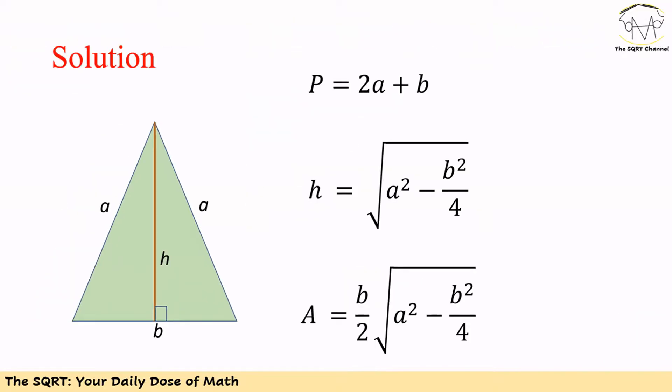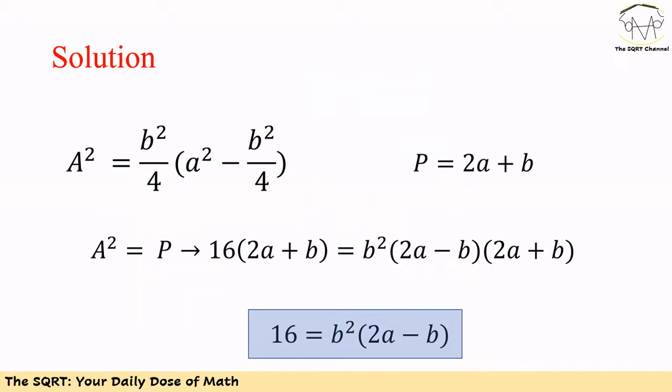In this triangle we can write P as 2a plus b. To find the area we can write H as square root of a squared minus b squared over 4, and then A is equal to H times b, which is b over 2 times the square root of a squared minus b squared over 4. We also know A squared is equal to P.